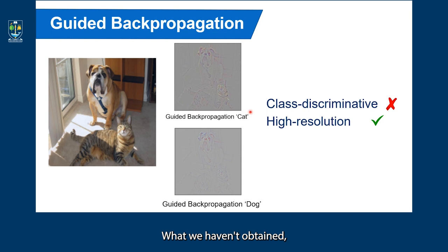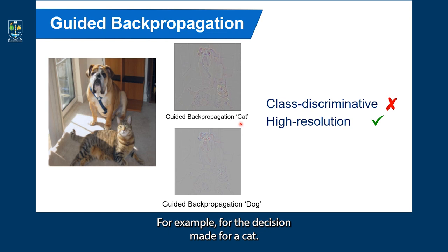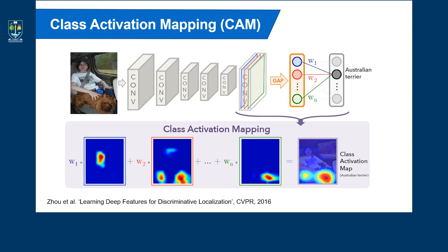What we haven't obtained, though, is a class discriminative explanation. For example, for the decision made for a cat, we see both animals quite clearly visible in the guided propagation map.